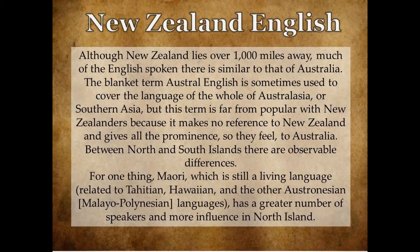New Zealand English: although New Zealand lies over 1,000 miles away, much of the English spoken there is similar to that of Australia. The blanket term 'Austral English' is sometimes used to cover the language of the whole of Australasia, but it is far from popular with New Zealanders because it gives all the prominence to Australia.